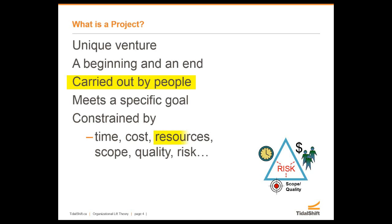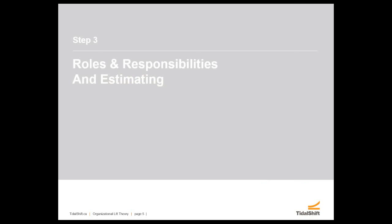When we talk in terms of constraints - time and cost are absolutely there, but we also have a constraint around resources. Do we have the resources we need? We're talking human resources, as well as equipment and supplies. But at the end of the day, people are a resource. We need to make sure we're getting the right people there, getting them there at the right time, engaging them, and dealing with issues. In our ten-step methodology, we bundled roles, responsibilities, and estimating because if we don't identify the roles and responsibilities first, we will not be able to effectively estimate.